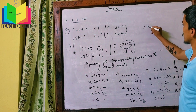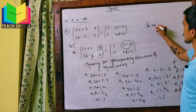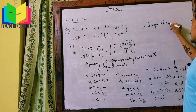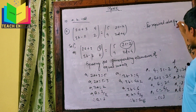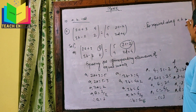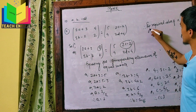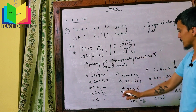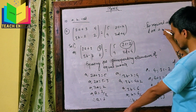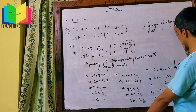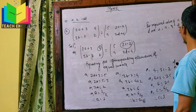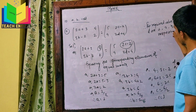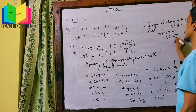Therefore the required values of A, B, C, and D are 1, 2, 3, and minus 1 respectively.